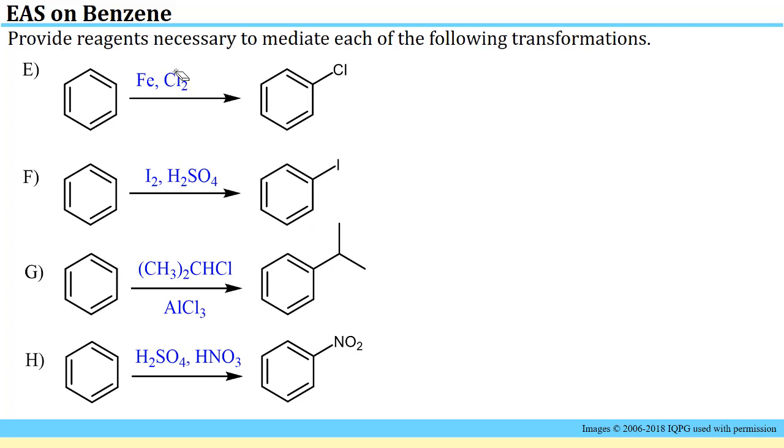And here are some possibilities. For the chlorination you could use iron and chlorine or you could use ferric chloride with chlorine. For iodination a convenient route would be to use iodine in sulfuric acid. And here we have an alkyl group we're putting on. You could use any of the ways to generate the carbocation necessary. One of the routes is using aluminum trichloride with this isopropyl chloride. The last one is a nitration. That's related to the first problem in this homework set. You just need sulfuric acid with nitric acid to facilitate that transformation.